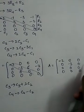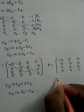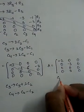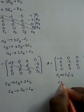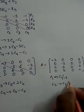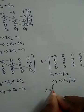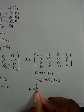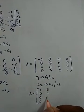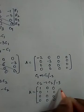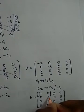Next, to make it one: column one becomes column one divided by minus 2; column two becomes column two divided by minus 3. Then what we get is: 1, 0, 0, 0; 0, 1, 0, 0; 0, 0, 0, 0; 0, 0, 0, 0. So here we got the identity matrix which is a 2 by 2 matrix.